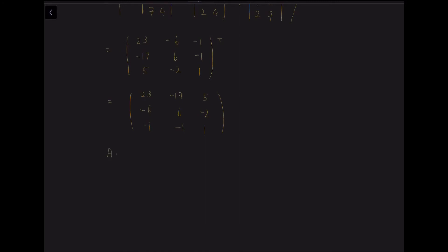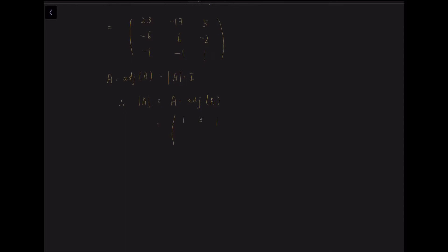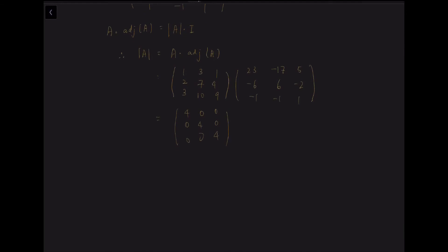To find the determinant, we use the identity: A times adjoint A equals the determinant of A times the identity matrix. Using this formula, the determinant of A equals the result of matrix A times adjoint A. We copy down matrix A and adjoint A, perform the multiplication, and obtain a diagonal matrix with value 4. So 4 is the determinant of the matrix. Substituting both adjoint A and the determinant, we get the inverse of A.